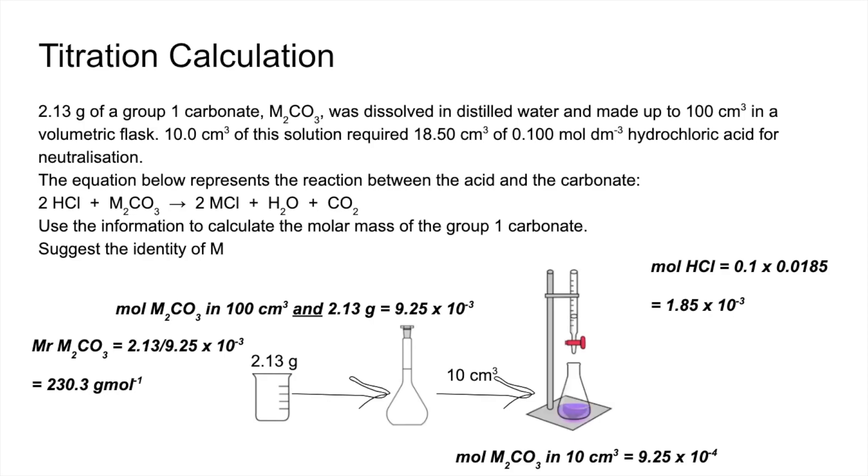Just so you know, I've kept the full number in the calculator. I'm going to round at the very very end. And then to work out the mass of the two M's, we subtract 60 from the carbon and the three oxygens.